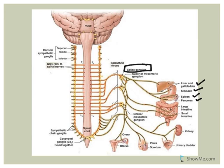Another example of a collateral ganglion is the superior mesenteric ganglion. Superior means higher up, so the superior mesenteric targets structures higher than what is innervated by the inferior mesenteric ganglion - specifically the small intestine and the first couple segments of the large intestine, which include the ascending colon and the transverse colon.